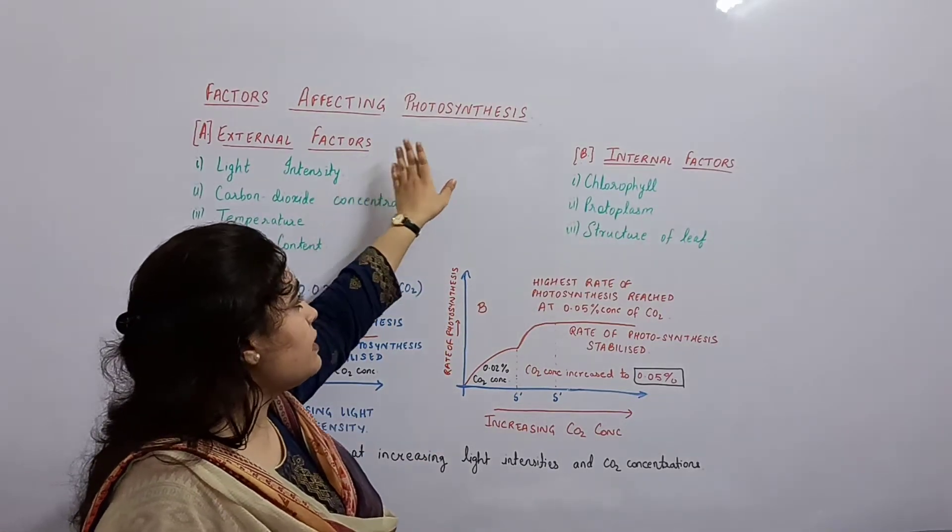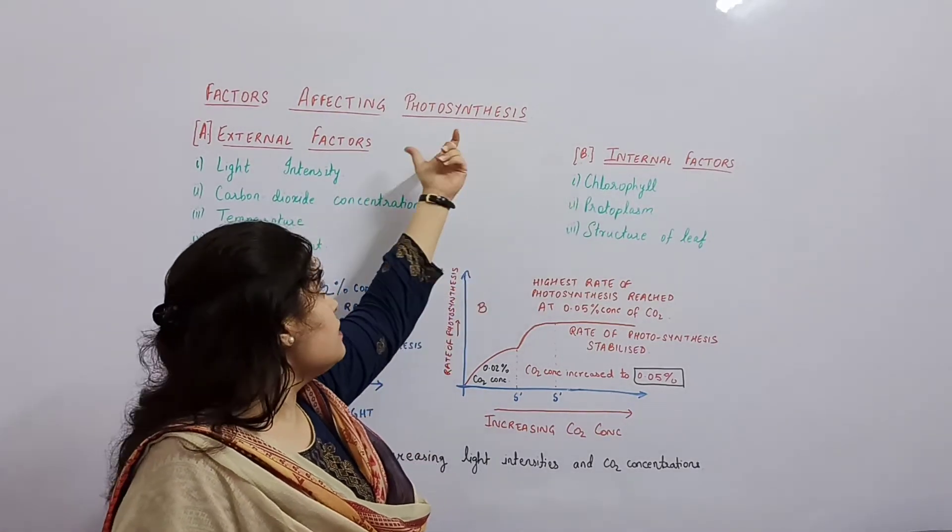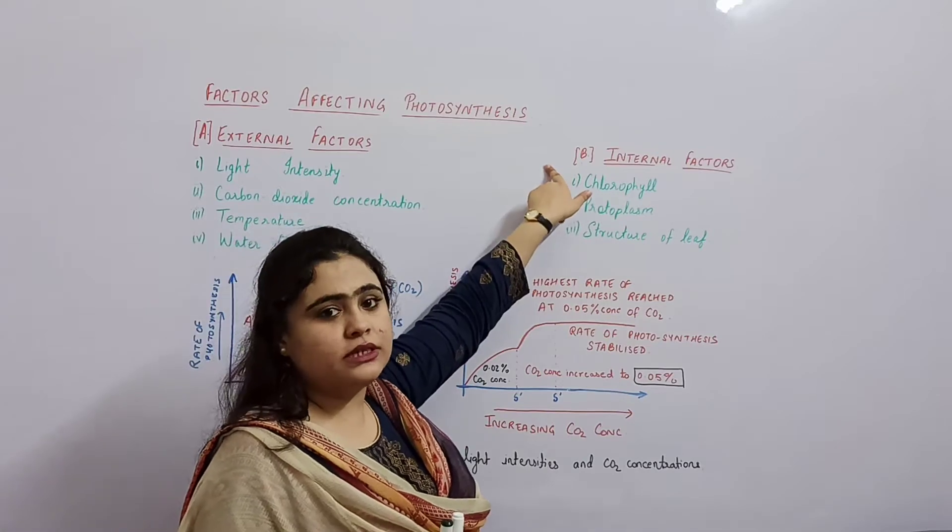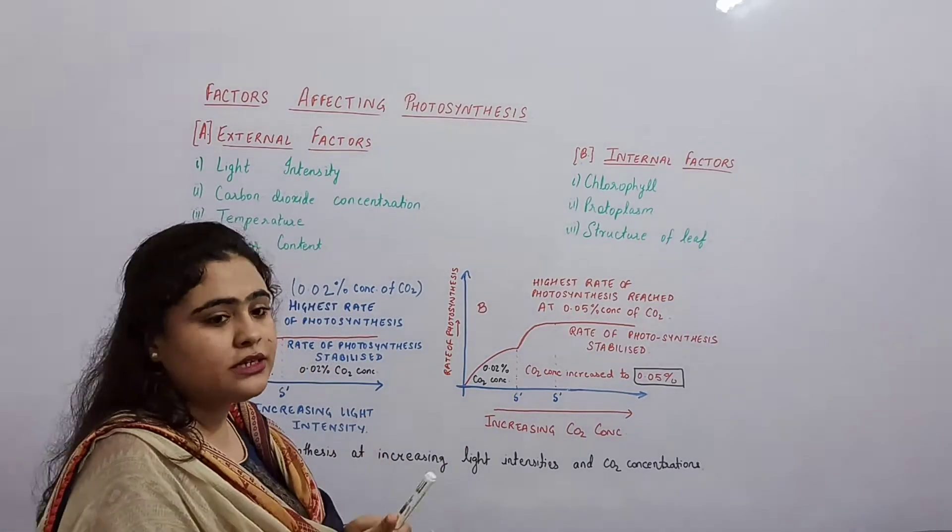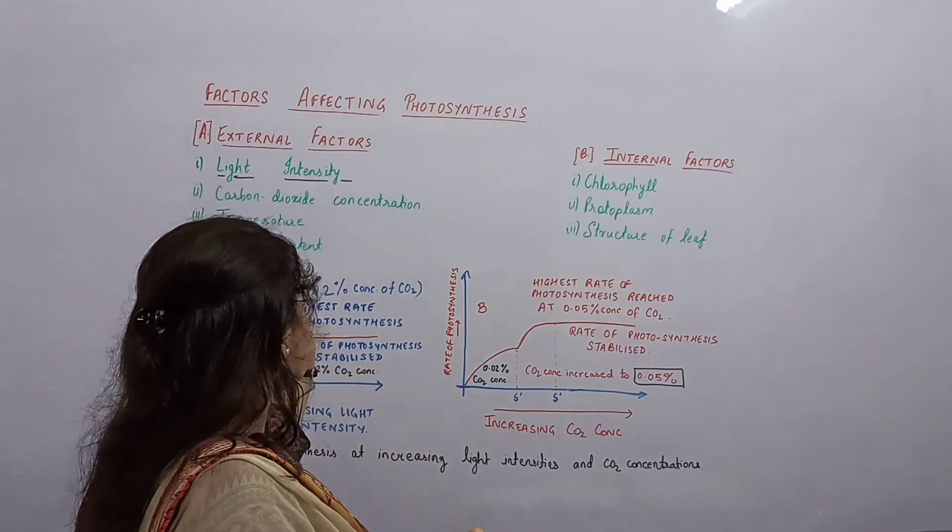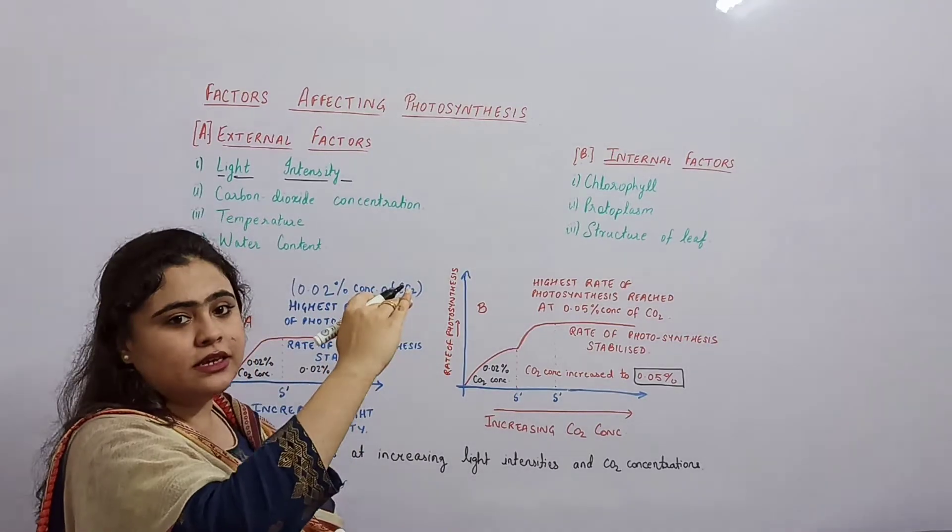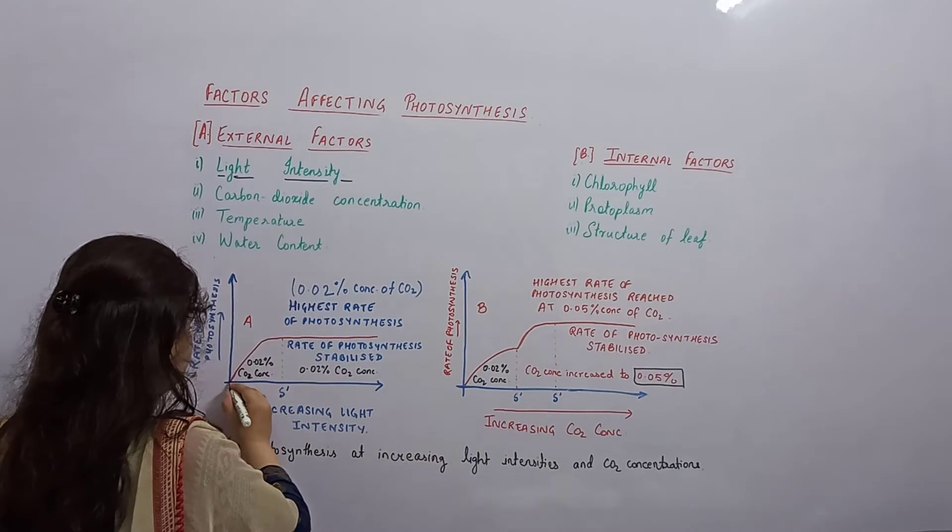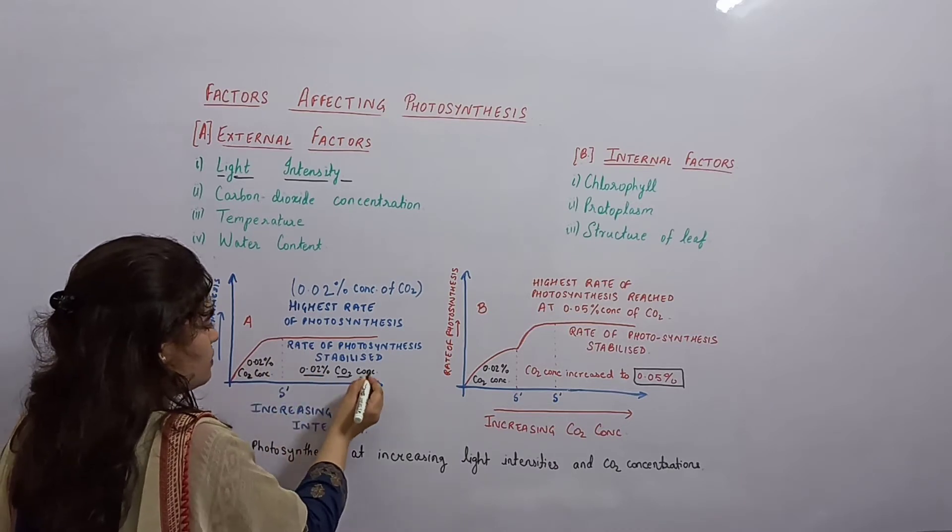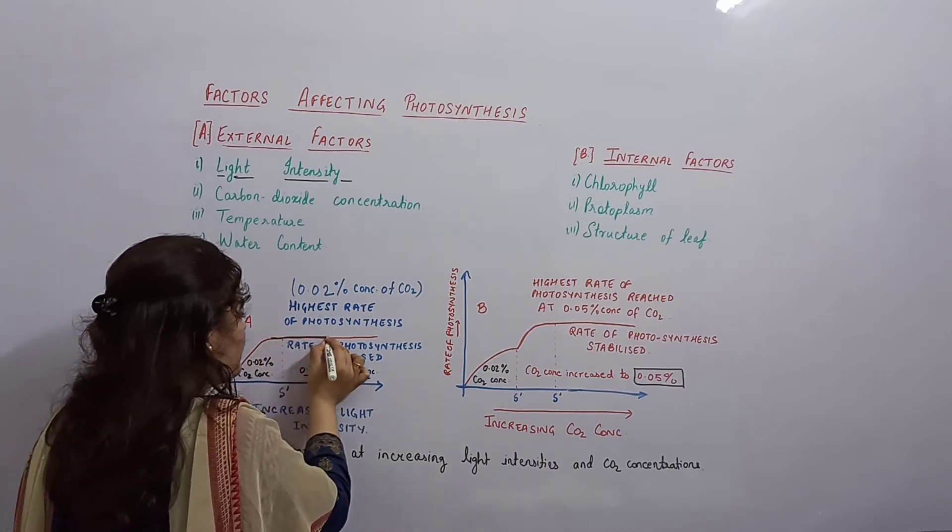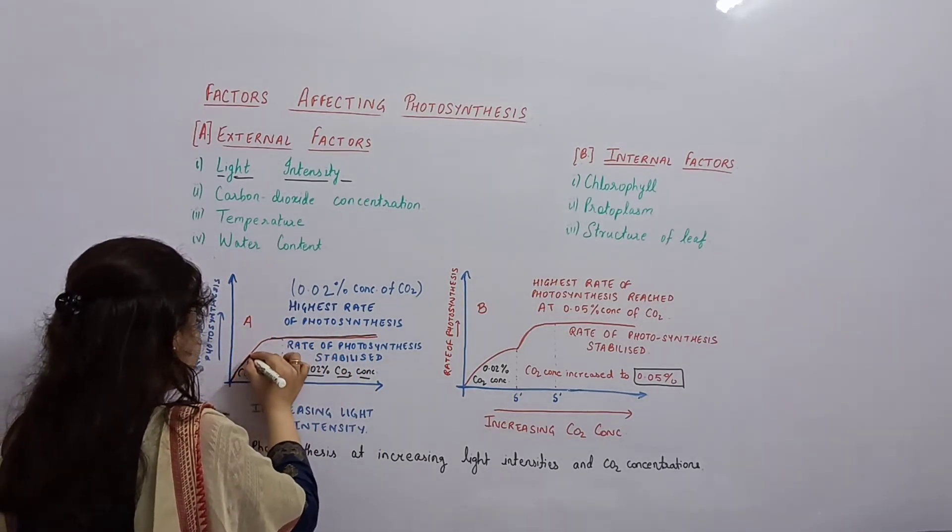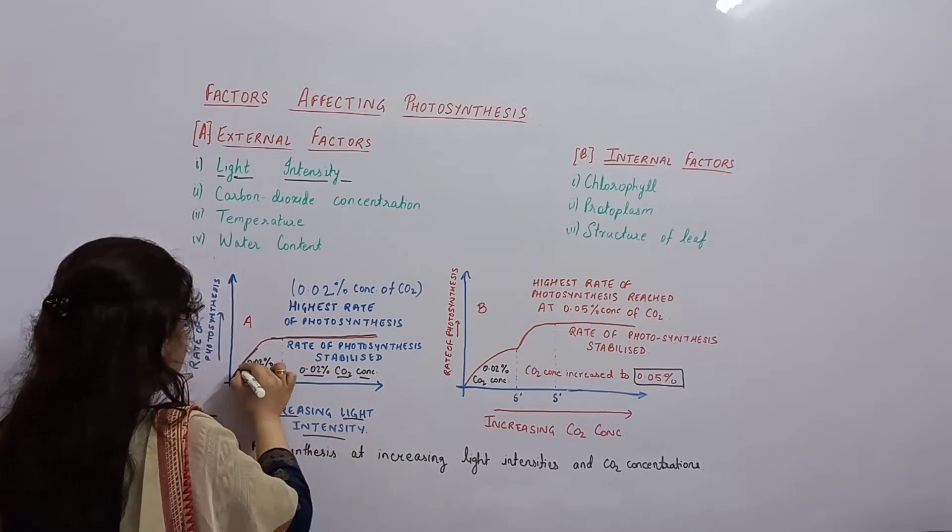It depends on external factors and internal factors. External factors - what is the first factor? Light intensity. If light intensity is increased, then photosynthesis will increase. But at 0.02% CO2 concentration in air, the rate of photosynthesis will stabilize. So if light intensity increases, then rate of photosynthesis will increase.